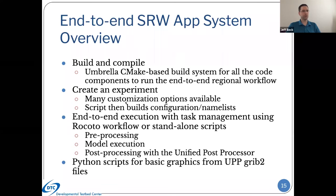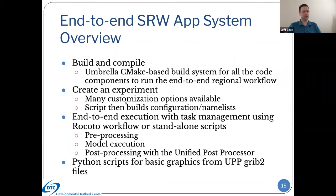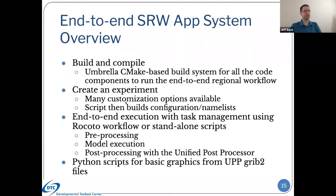We have end-to-end execution with task management from either a Rocoto workflow XML or these standalone scripts. They go through and execute each of those individual executables necessary for preprocessing, then run model execution, and then run UPP. We have also implemented some Python scripts for basic graphics of UPP GRIB2 files — fairly simple but powerful scripts that allow you to plot around 15-some variables out of the box for your UPP GRIB2 files for the predefined CONUS domains. There's also a difference script where if you run two different configurations using the same grid, you can run difference plots on them and figure out where things differ between your two experiments — a really powerful tool for users to compare their experiments and outputs.